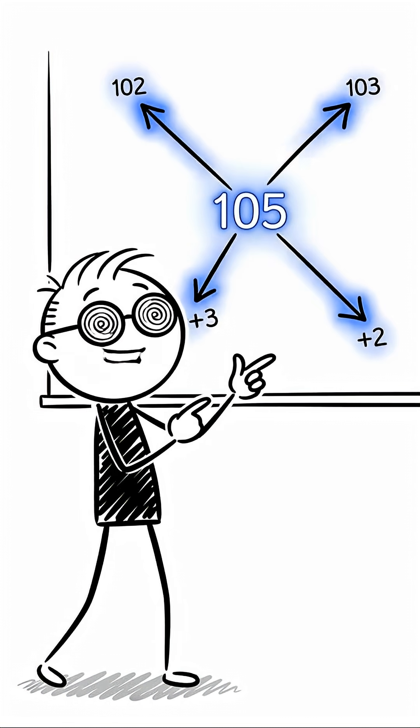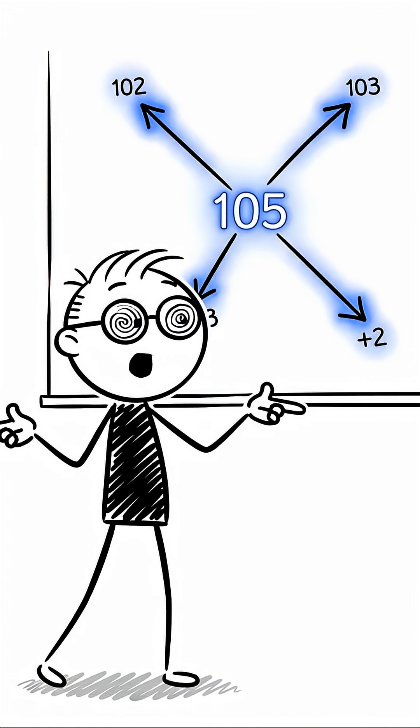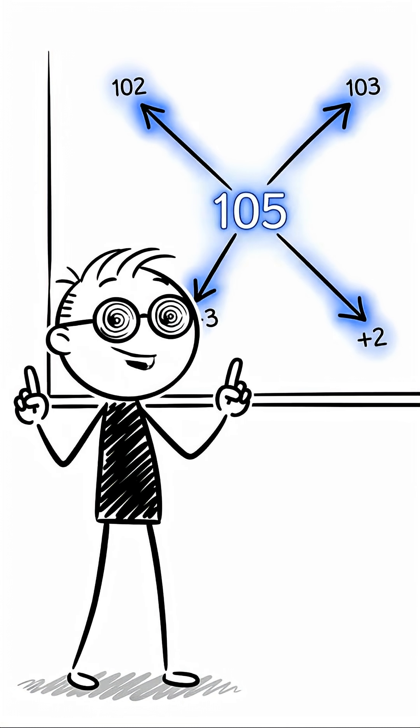Step one, cross add. It works both ways. 102 plus three is 105, or 103 plus two is also 105. Take your pick, 105 is the first part.